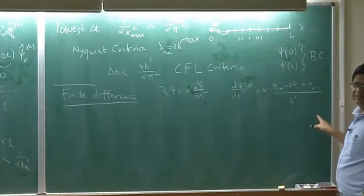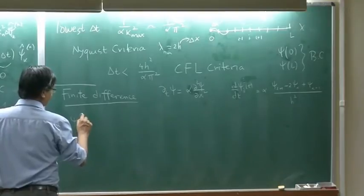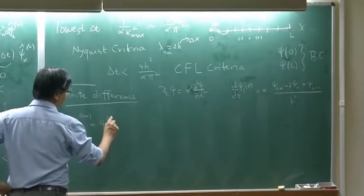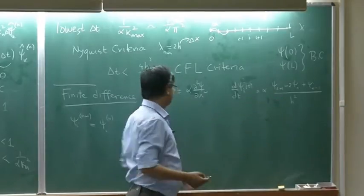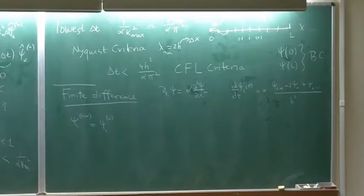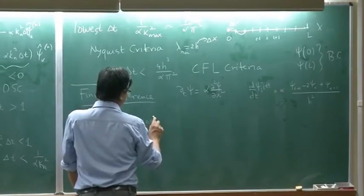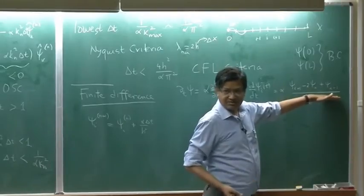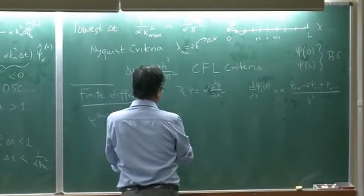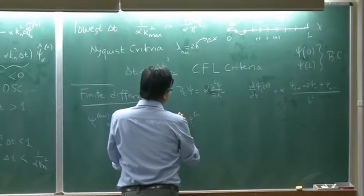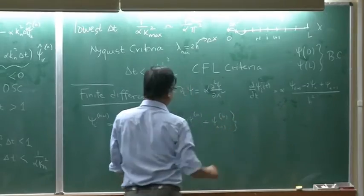How do I time step this? The usual technique is: psi_i at n+1 equals psi_i at n plus delta_t times the slope — Euler explicit. So, plus alpha over h squared times delta_t, and these are computed at time t. It should be psi_{i+1}^n minus 2 psi_i^n plus psi_{i-1}^n.